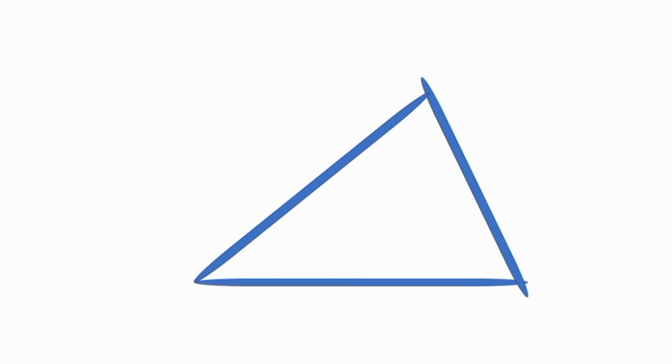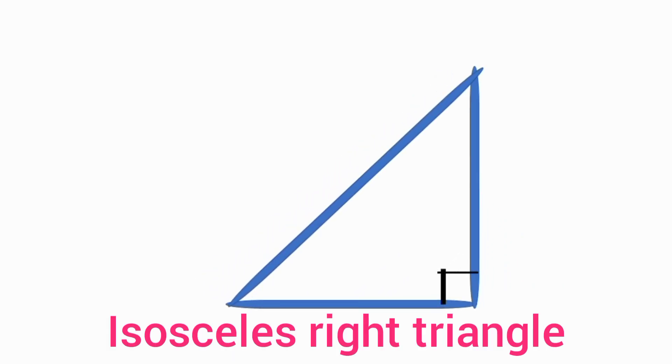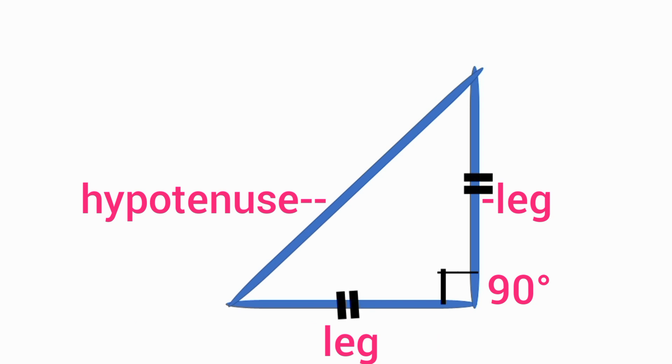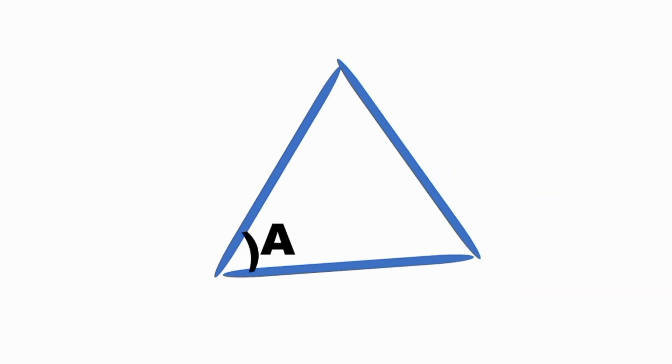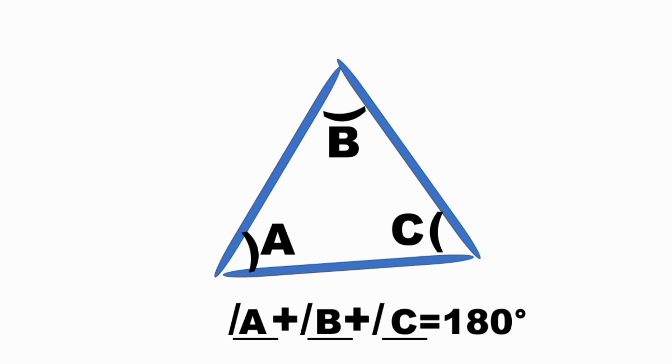Next is the isosceles right triangle. An isosceles right triangle is defined as a right angled triangle with an equal base and height which are also known as the legs of the triangle. The sum of the angles of a triangle is always equal to 180 degrees.